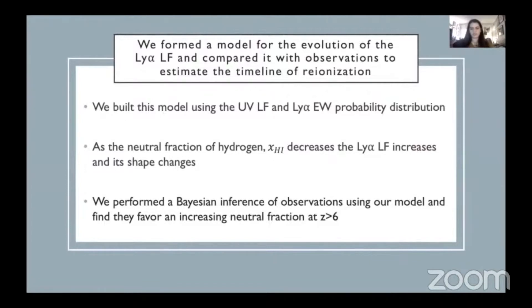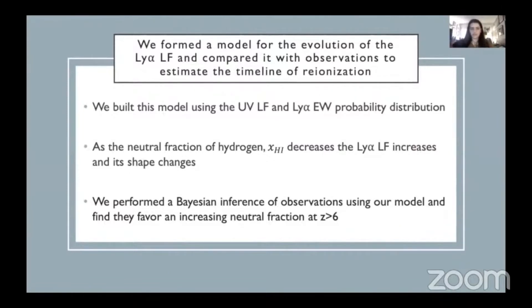We ultimately concluded that the shape of the Lyman-alpha luminosity function changes as the universe becomes ionized, as well as increases, and we can use this to compare and interpret observations made by others. Here we have an example of the observational Lyman-alpha luminosity function taken from the Silver Rush surveys, where the luminosity function shows the number density of galaxies with a given luminosity or magnitude. Moving backwards in time, as redshift increases, the amount of galaxies observed declines. How much of this evolution is due to the decline of galaxies at higher redshifts versus absorption during reionization?